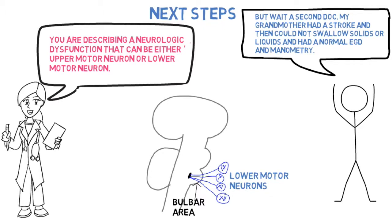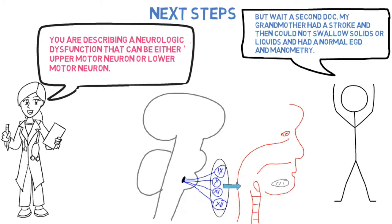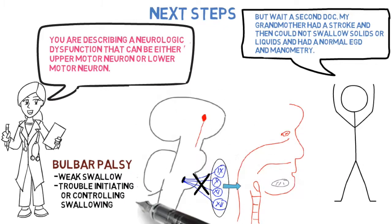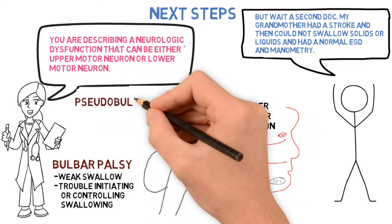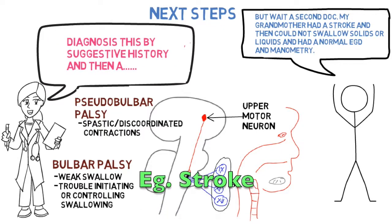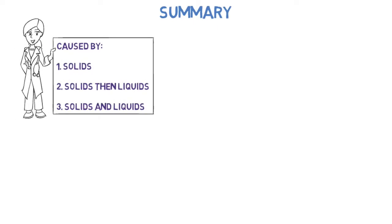The brain stem's bulbar area has lower motor neurons that supply the swallowing muscles. With bulbar palsy, we get weak swallowing and trouble initiating or controlling swallowing. We can also have upper motor neuron abnormality called pseudobulbar palsy — not really in the bulbar area — resulting in spastic, discoordinated contractions.